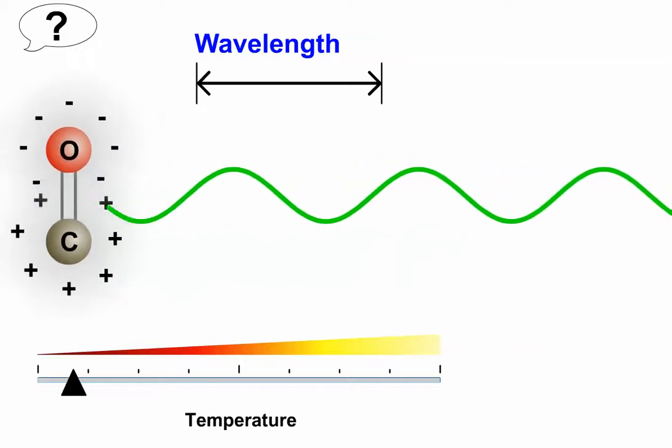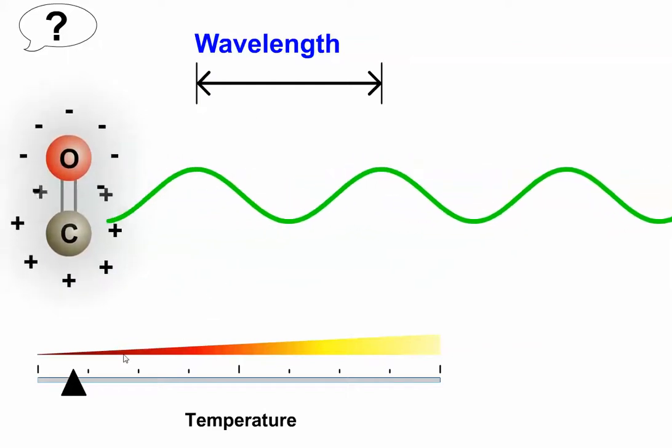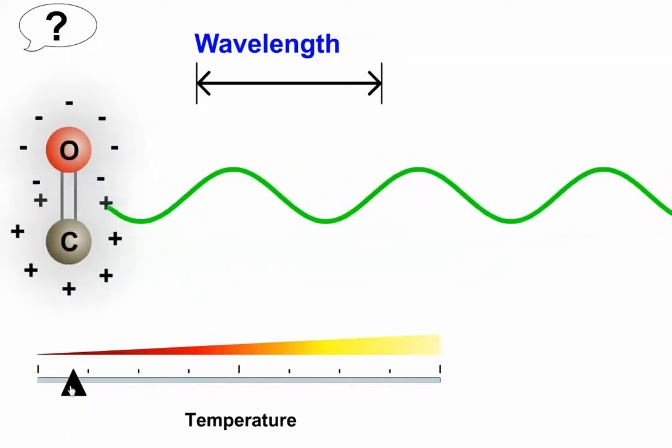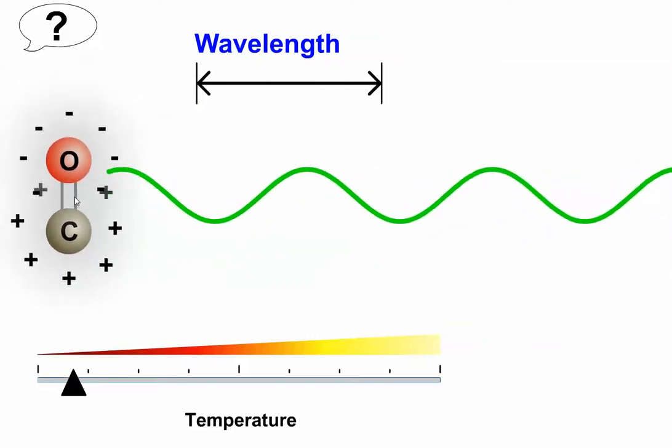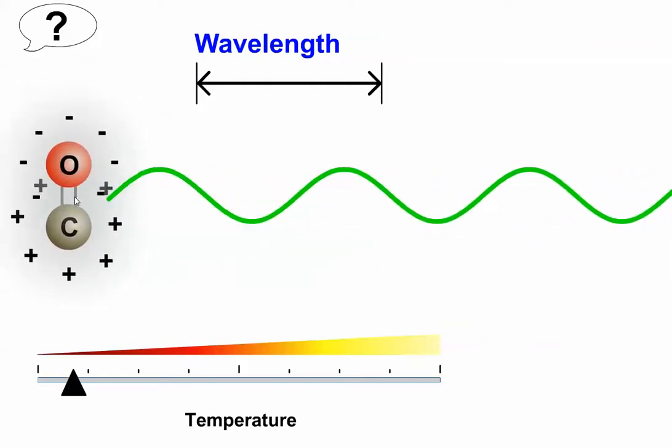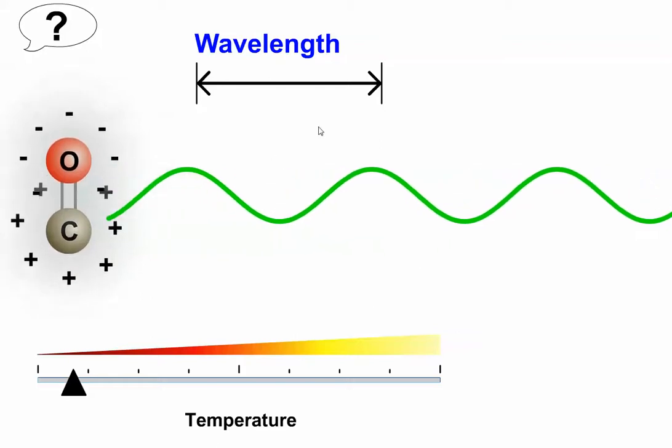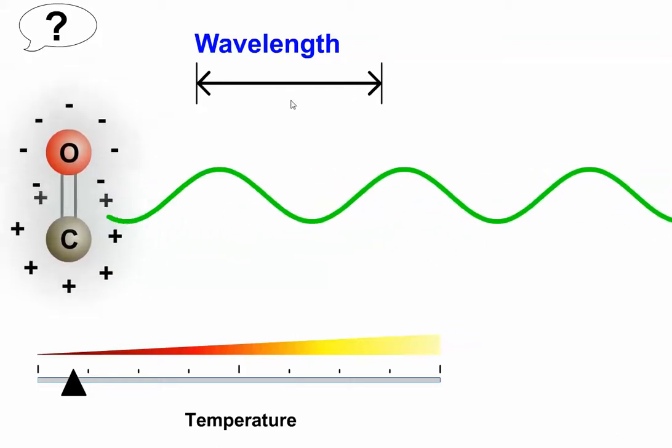Lower temperatures yield lower frequencies of oscillation. Here we've set our temperature on the low side and you can see the molecule oscillating fairly slowly, or in other words at a low frequency. The wavelength of the emitted radiation is also relatively long.